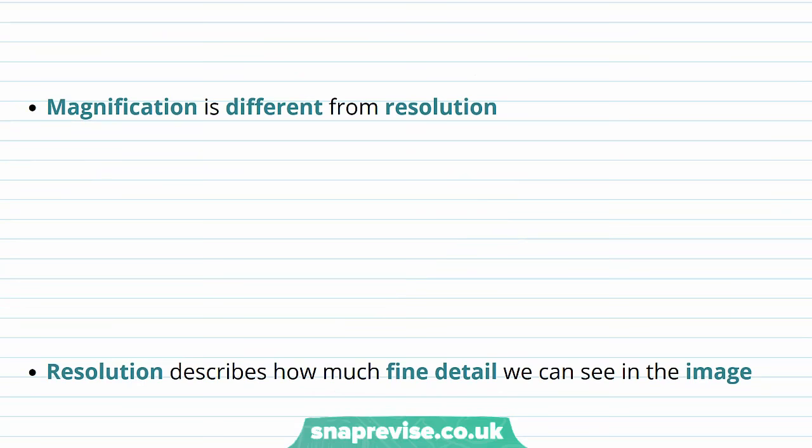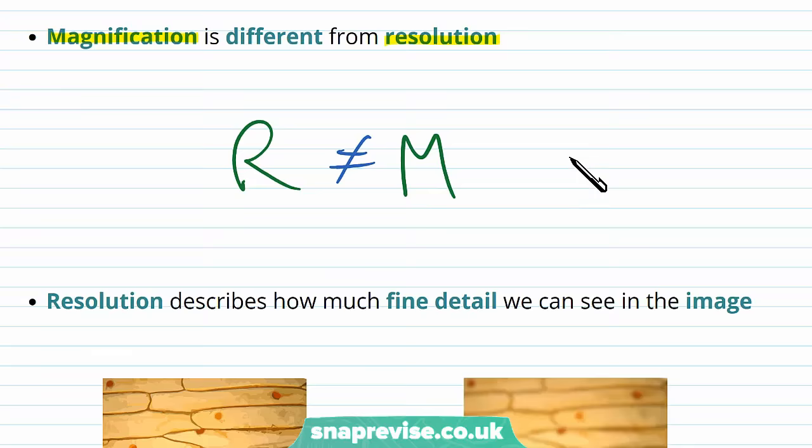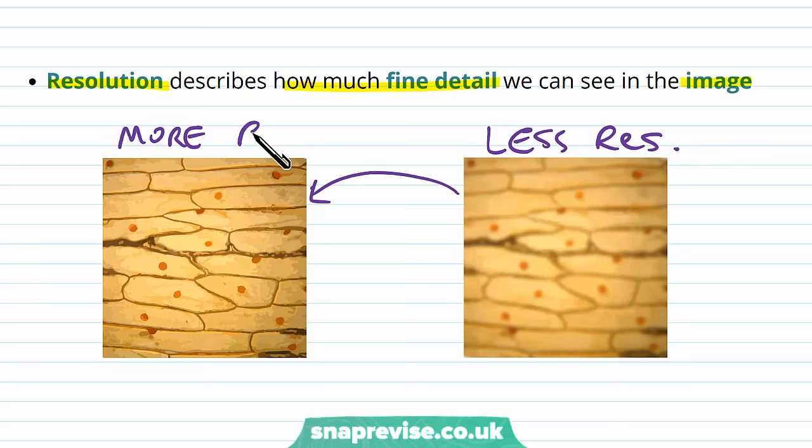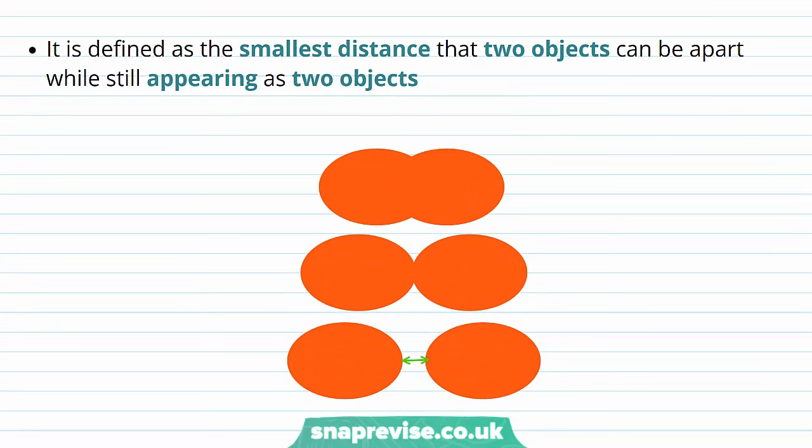But magnification is not the same as resolution. Resolution and magnification are completely different things. The resolution is something that describes how much detail we can see, how much fine detail we can see in an image. Something with a greater resolution looks sharper and more detailed in its finer structures. This is quite similar to a TV. Clearer, sharper TVs with higher definition have more resolution. The way that we define resolution is that it's the smallest distance that two objects can be apart, still appearing as two objects. You could look down a microscope and see an object that looks like a big blob. It looks like one object. But in real life they're two separate things.